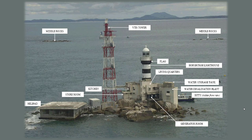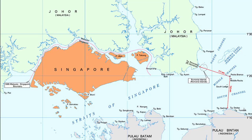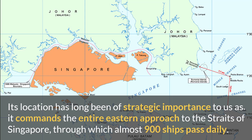Pedra Branca sits at the eastern entrance of the Straits of Singapore, about 24 nautical miles to the east of Singapore. In comparison, the distance to Malaysia is about 7.7 nautical miles, and to Pulau Bintan in Indonesia is 7.6 nautical miles. So it's actually much closer to Malaysia and Indonesia than to Singapore — but its location has strategic importance to us, as it commands the entire eastern approach to the Straits of Singapore, through which almost 900 ships pass.